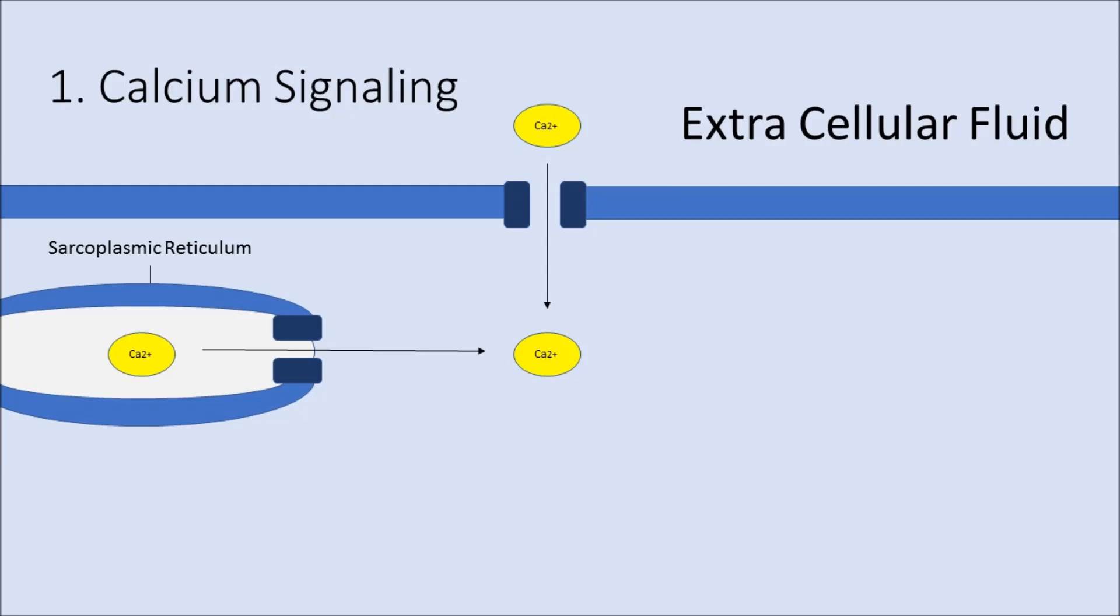In skeletal muscle, it comes from the sarcoplasmic reticulum releasing the calcium, but as the smooth muscle releases this calcium into the cell, that signals the sarcoplasmic reticulum to also release calcium.